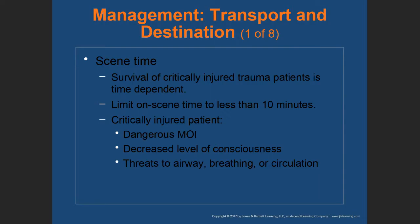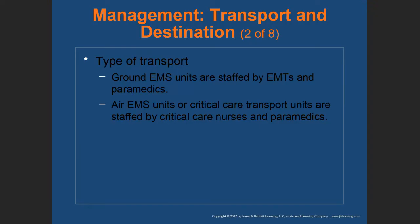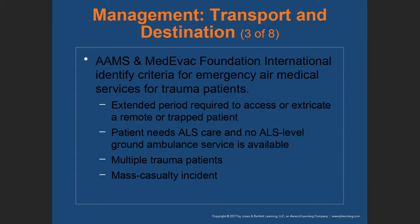Critically injured patients with a dangerous MOI: you're looking for a decreased level of consciousness, or any patient in whom airway, breathing, and circulation is compromised — these are critical patients. Types of transport include ground EMS staffed by EMTs and paramedics, critical care transport staffed by critical care nurses or paramedics, or critical care nurses and a physician — the composition depends on the service and location.